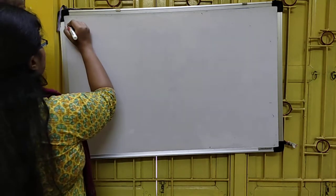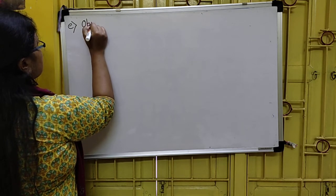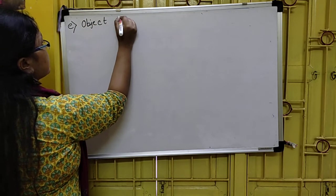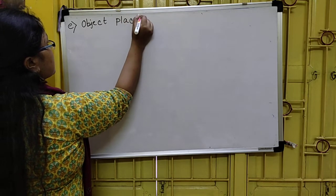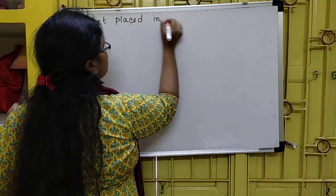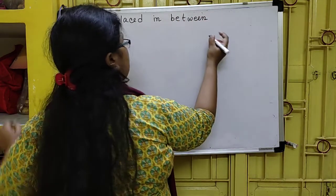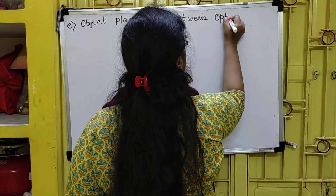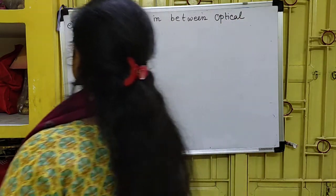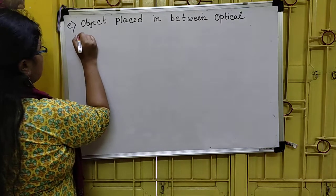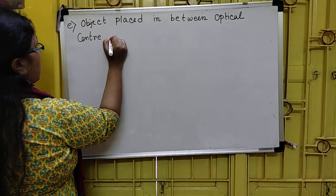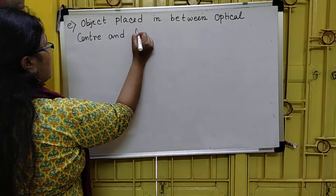This is the continuation part of image formation by convex lens as well as concave lens. Last time we covered object placed between optical center and focus.